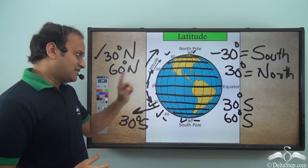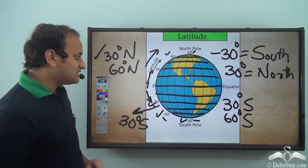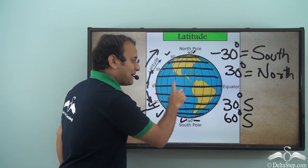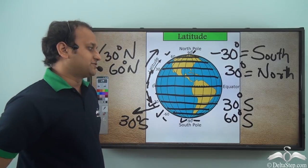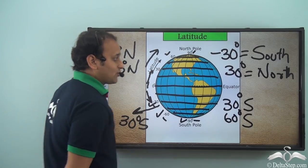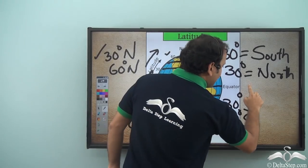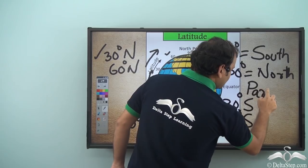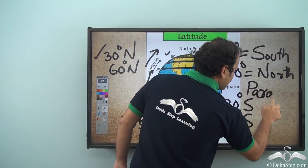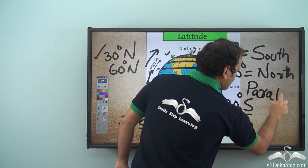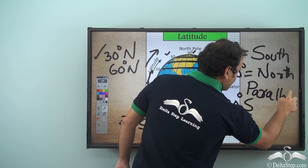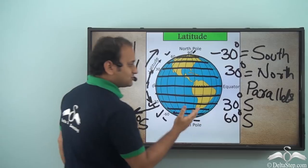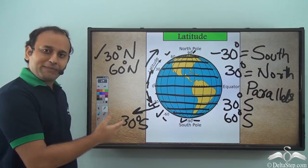All these lines are parallel to the equator, so they are also called parallels. The latitudes are also called parallels.